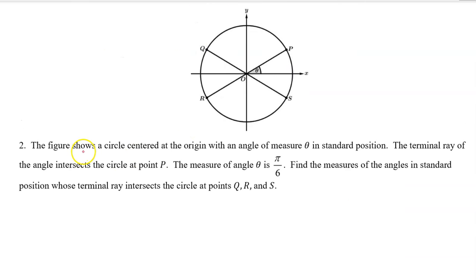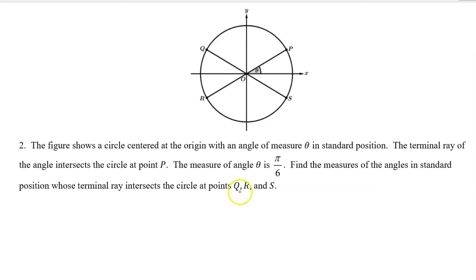Number 2. The figure shows a circle centered at the origin with an angle of measure theta in standard position. The terminal ray of the angle intersects the circle at point P. The measure of angle theta is pi over 6. Find the measures of the angles in standard position whose terminal ray intersects the circle at points Q, R, and S. The angles at Q, R, and S are multiples of pi over 6.